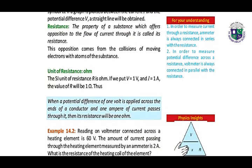What is resistance? Here we have the definition and unit of resistance. The property of a substance which offers opposition to the flow of current through it is called the resistance. Its unit R is ohm. If we put V equal to 1 volt and I equal to 1 ampere, the value of R will be 1 ohm.